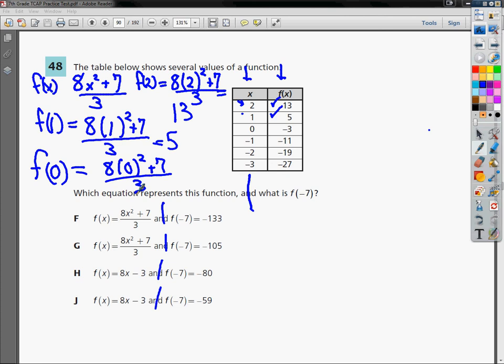So 8 parentheses 0, close it, squared, plus 7. I divide that by 3, and it gives me 2.3. But what I'm supposed to get is negative 3, and I don't. So anything with 8x squared plus 7 over 3 doesn't work. So they're out. So this is out, and this is out.